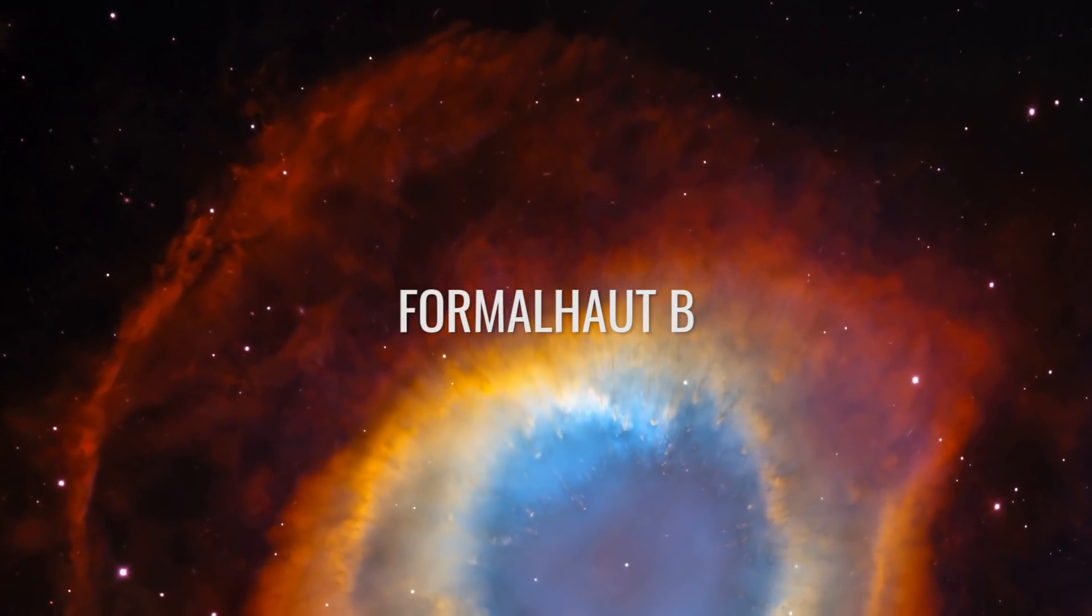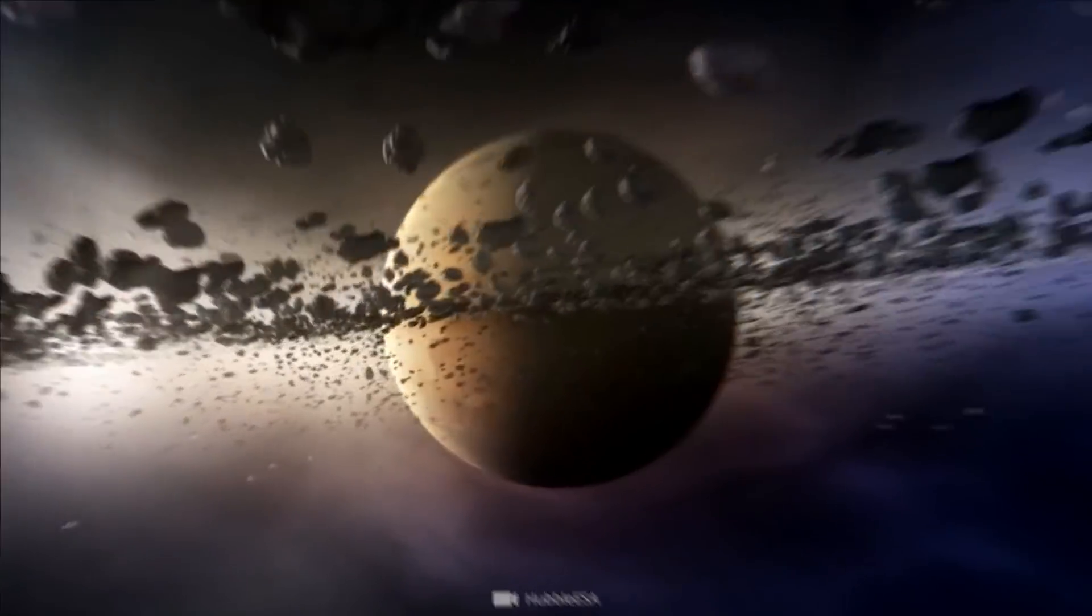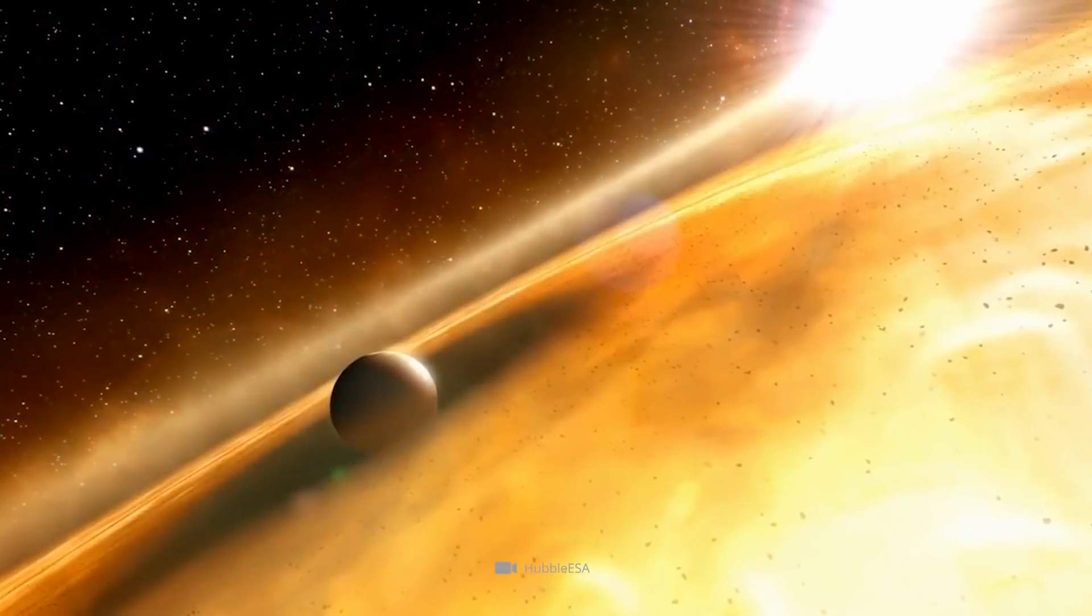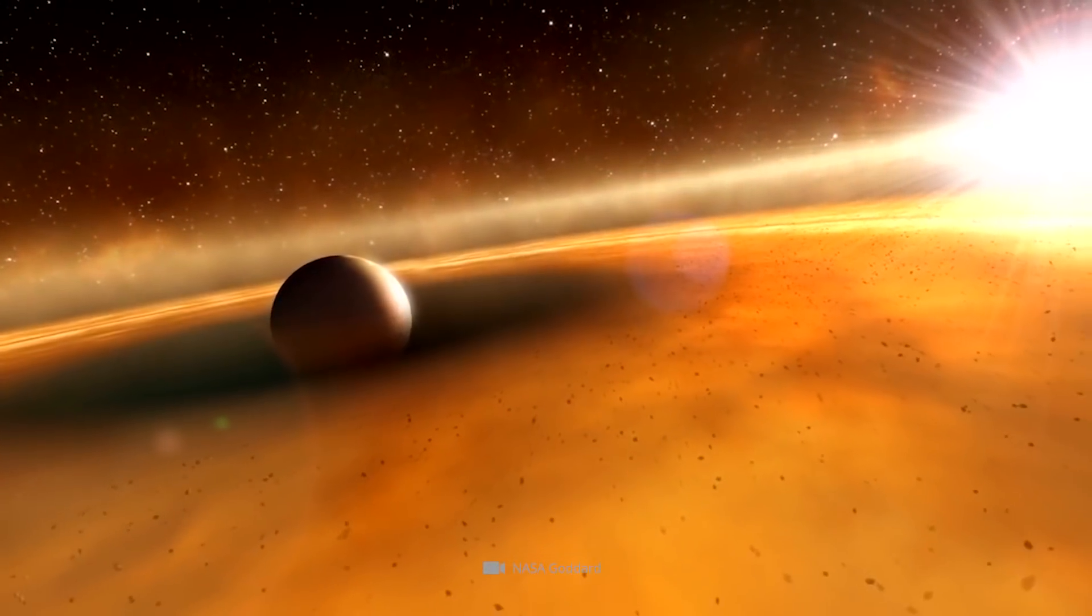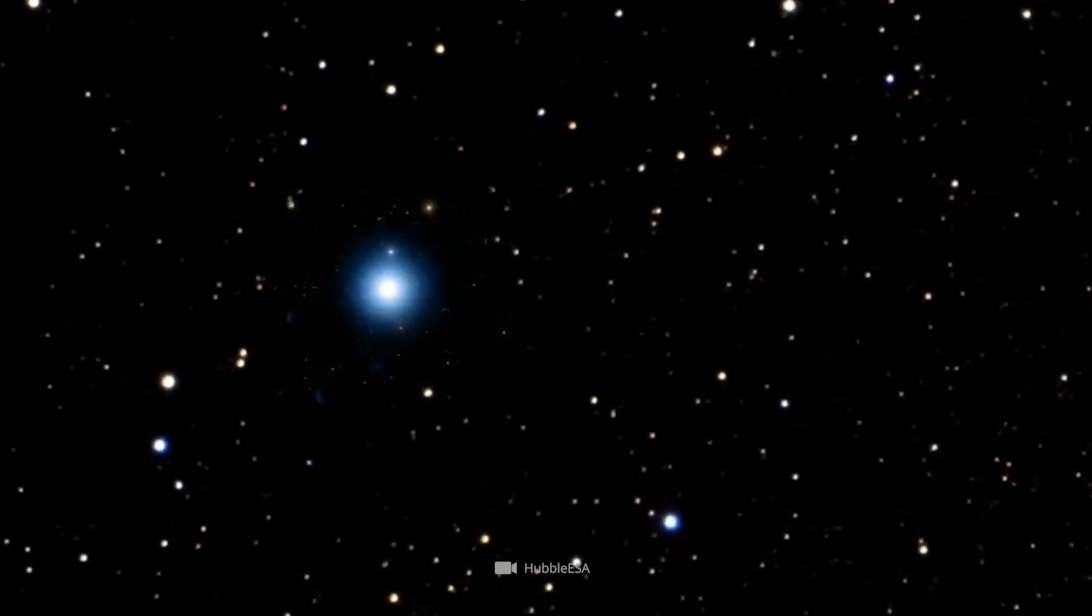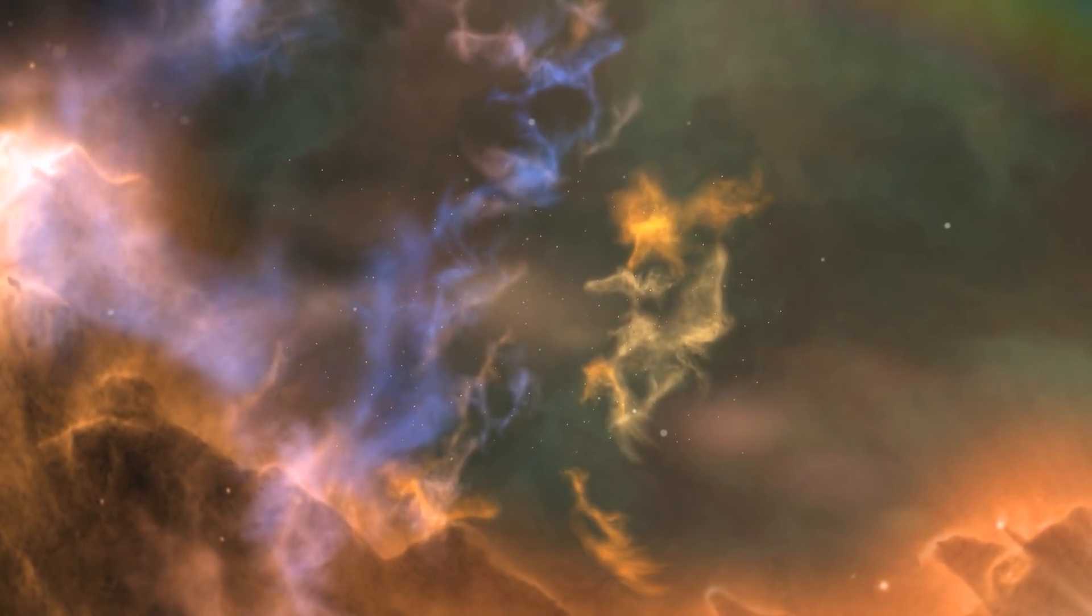Formal Hut B: If Formal Hut B is indeed an exoplanet, it would be the first extrasolar planet in the history of research that could be detected directly in optimal light. However, the actual background of this exciting formation in the constellation of Southern Pisces has yet to be determined. On the other hand, there is the assumption that it's not actually a larger planet, but only a dust cloud, the result of a collision of two smaller astronomical bodies. The fact that the epitomous host star Formal Hut, which is about 25 light-years away from our solar system, is possibly accompanied by a planet is justified with the signs in the surrounding dust disk.